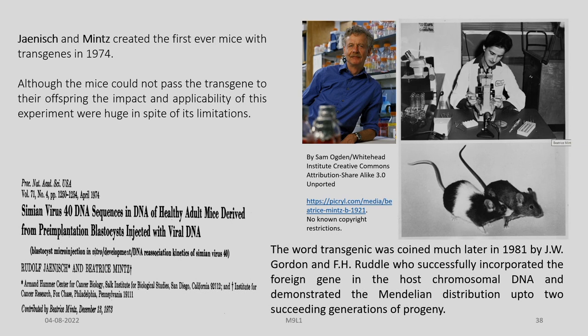As long ago as 1974, Janice and Minch published a paper in PNAS. They were the first to create mice with transgenes. These are some of the pictures of those transgenic mice, as well as Beatrice Means and Rudolf Janice. However, the mice they developed could not pass the transgene to their offspring, though the impact and applicability of this experiment were huge in spite of this limitation.